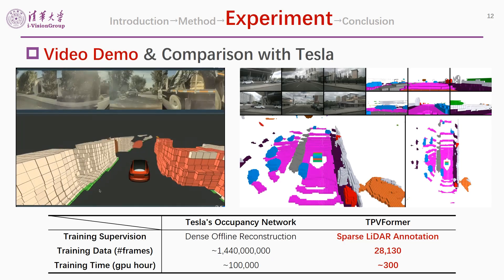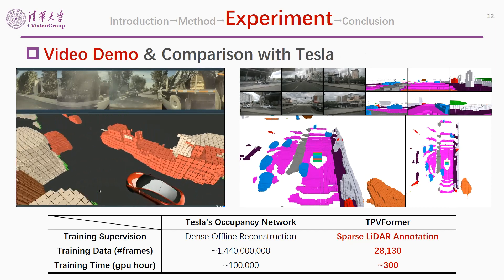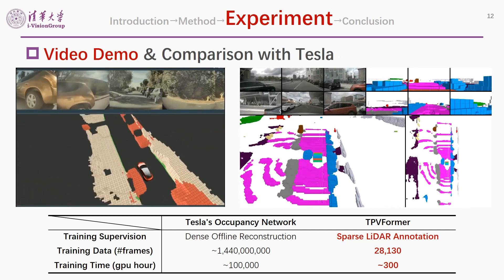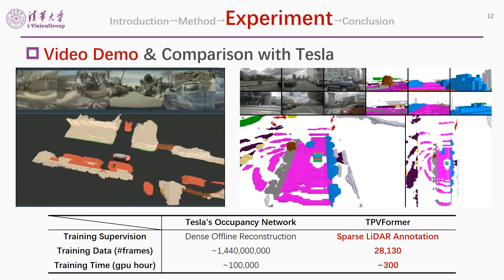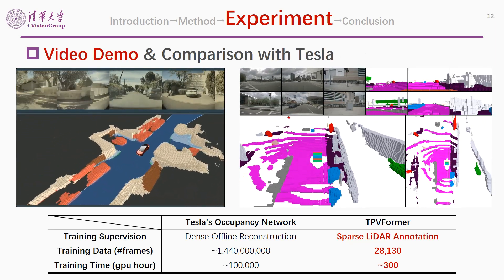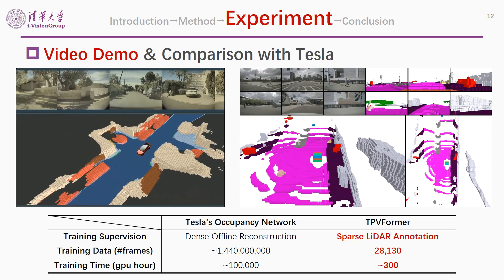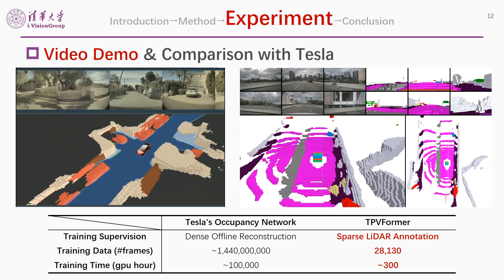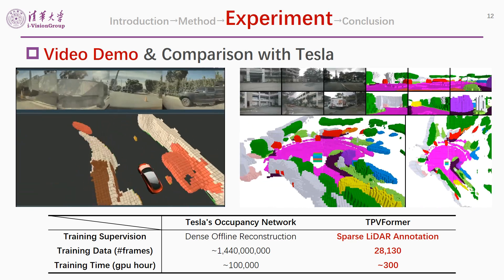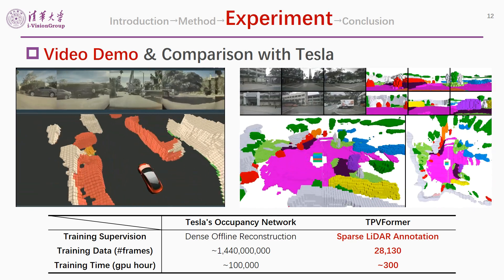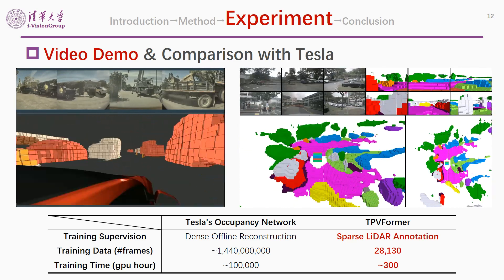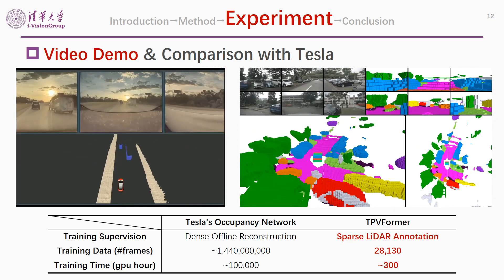We also present a video demo and compare it with Tesla's occupancy network. Apparently, our result is competitive and even superior to Tesla's in many aspects. Note that Tesla's occupancy network can only predict the surface of a vehicle in some scenarios, while our model can always predict solid and complete shapes. Our model also works very well at night, on rainy days, and when many cars are present.